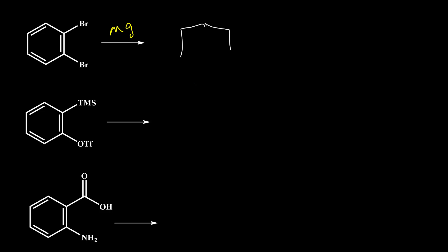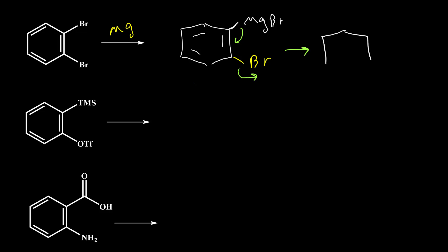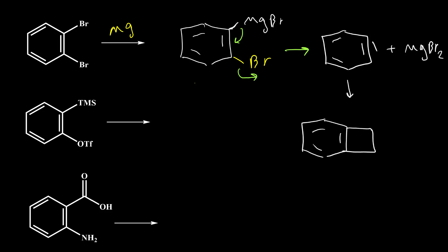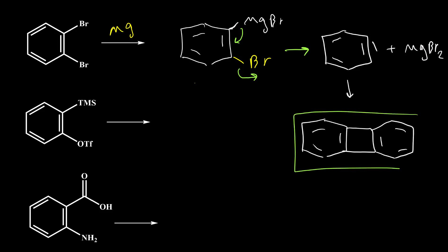We can also synthesize benzyne intermediate using three types of compounds. For the first method, using magnesium, magnesium causes formation of a Grignard reagent for one of the halogens, so we may have MgBr here. This Grignard reagent acts like an anion, and then these electrons come here and kick the bromine out of the structure, giving us benzyne plus MgBr2. If there is nothing to react with this benzyne intermediate, it can dimerize and form a specific structure. The existence of this dimer product, even in low percentage, is proof that we have formation of benzyne in the mechanism.